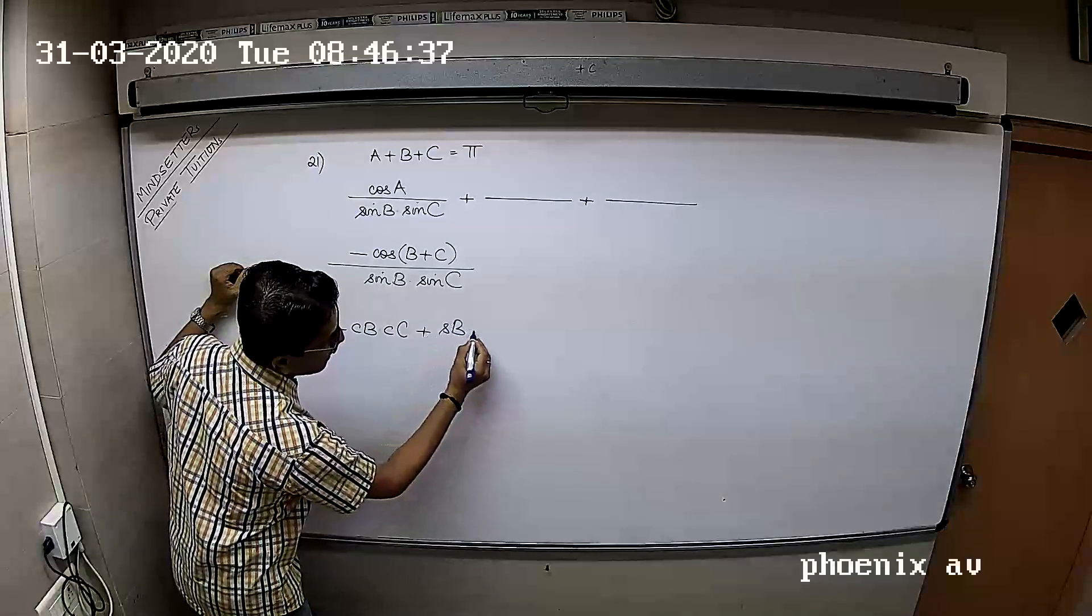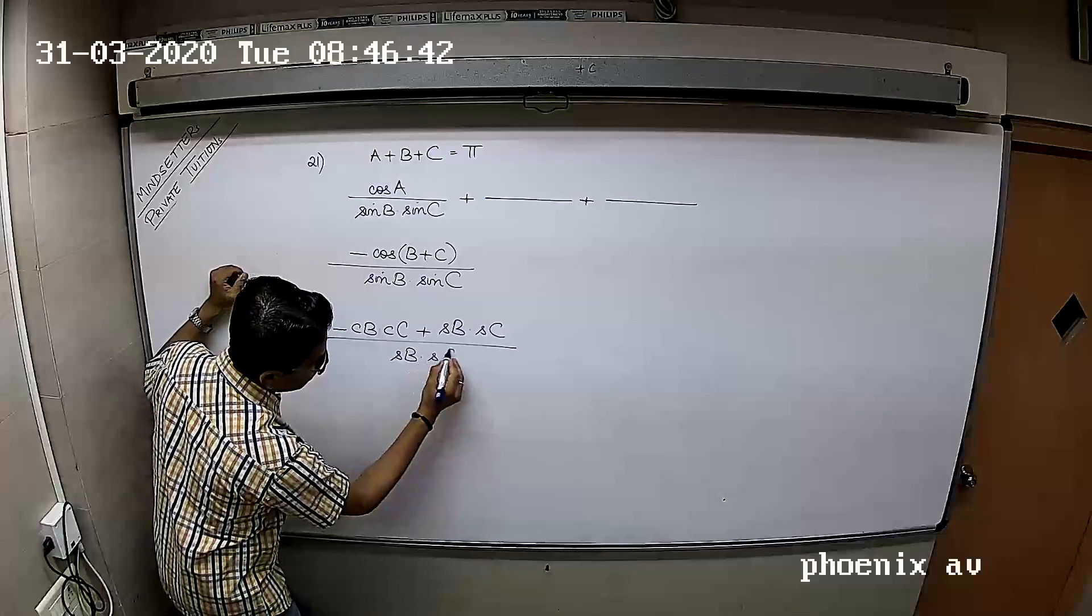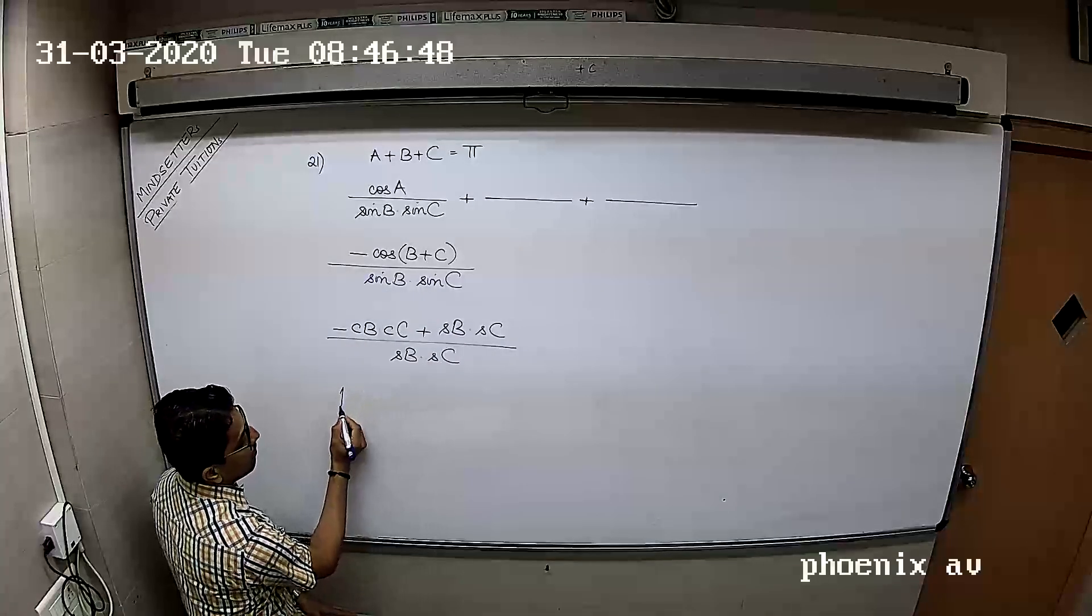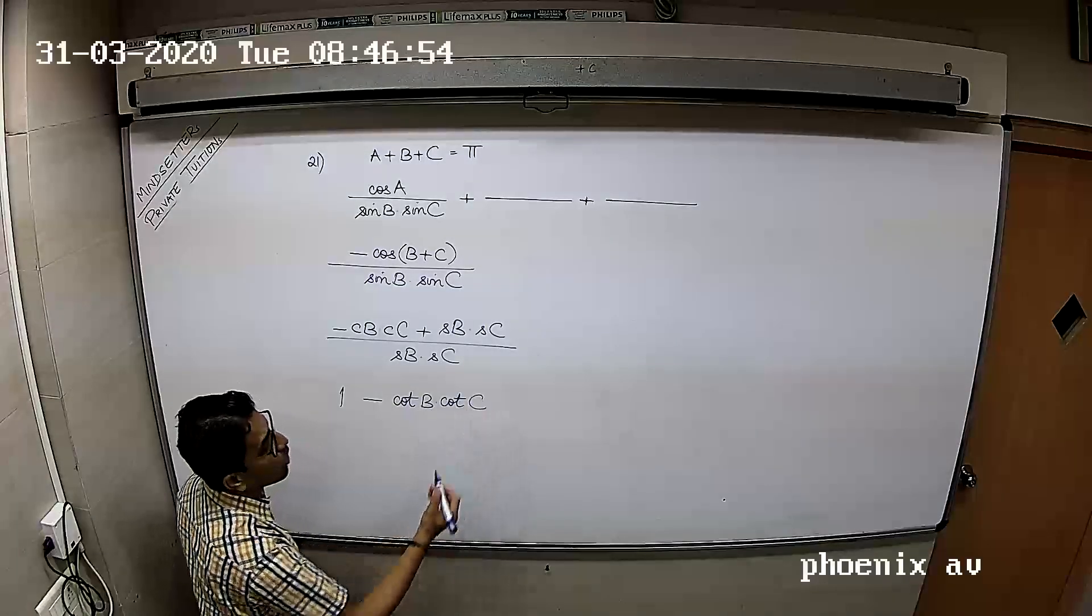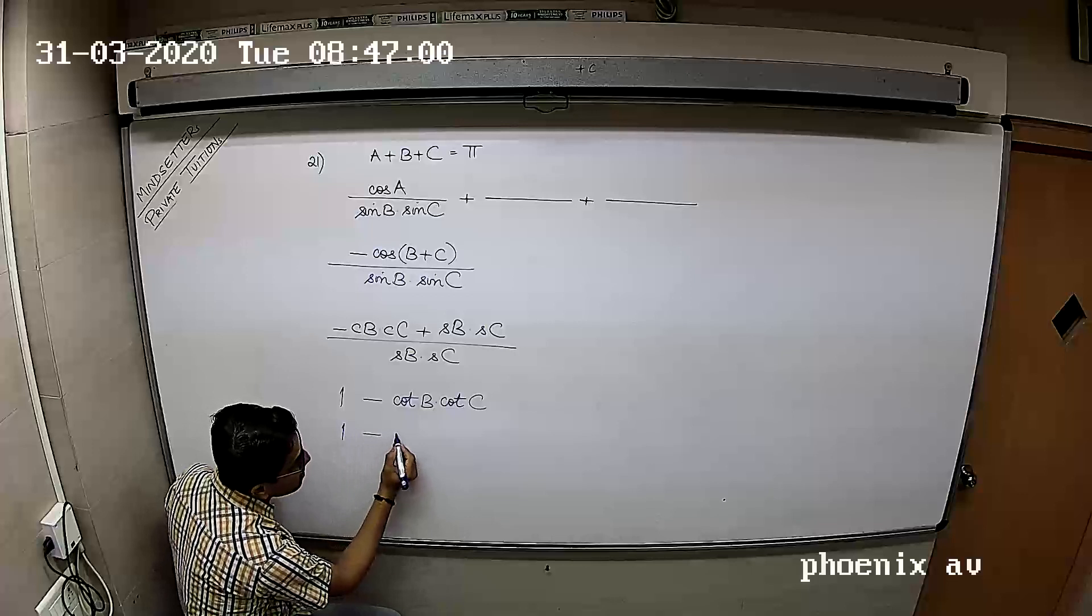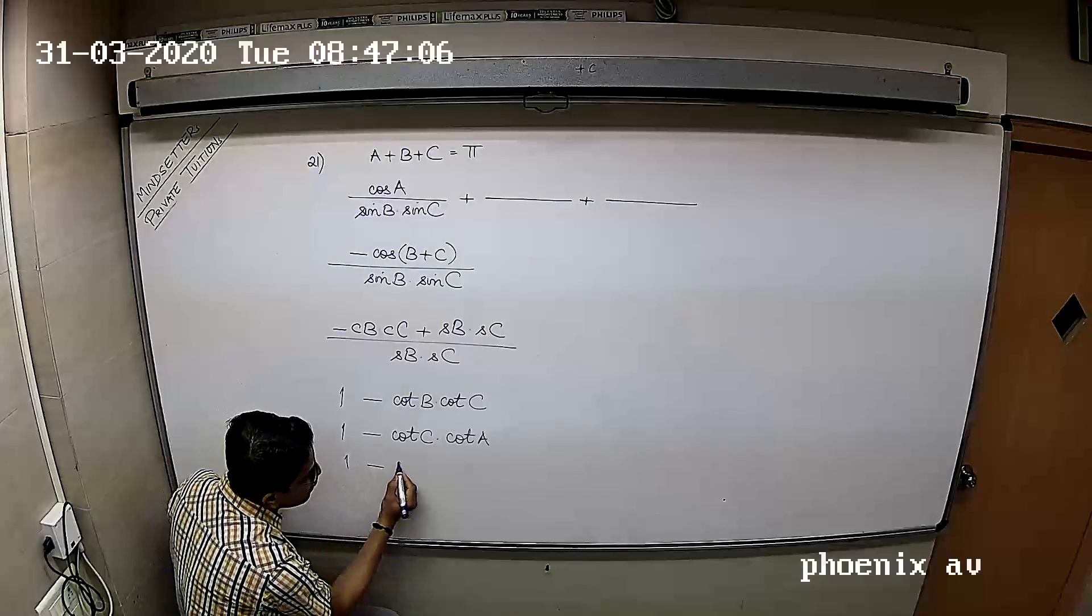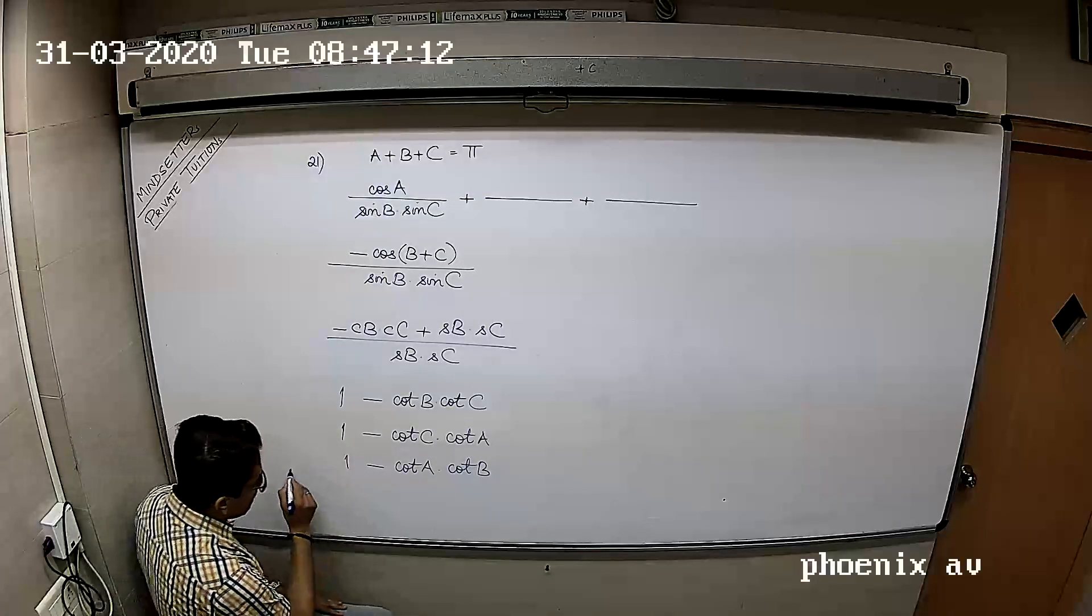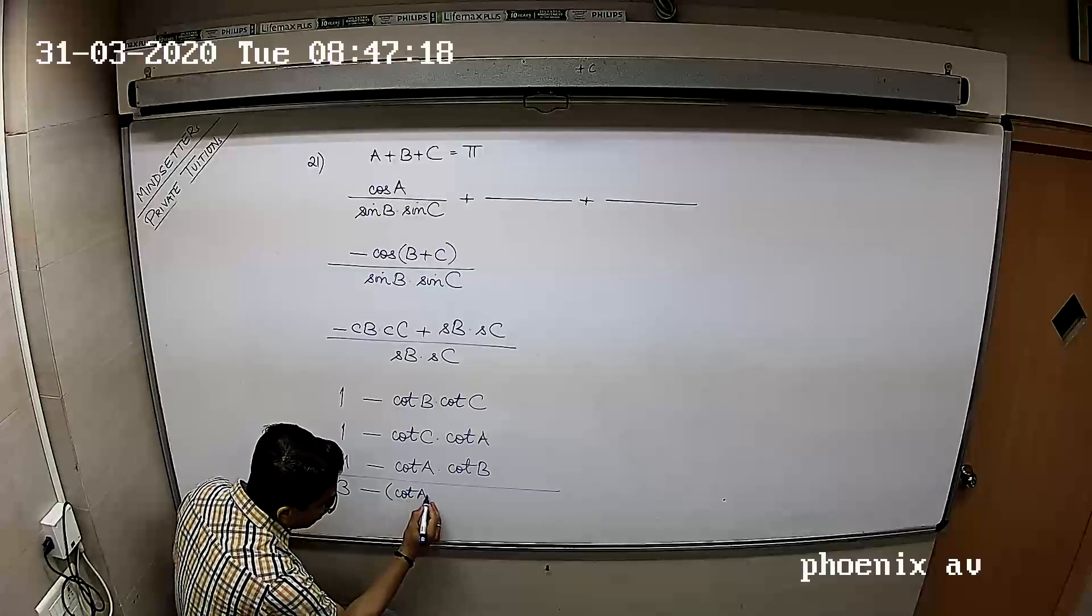This will become minus cos B cos C upon sin B sin C plus 1. If this is the same for all three terms, this will become 1 minus cos C cos A, second term is 1 minus cos A cos B, third term. That means overall this will be 3 minus cot A cot B plus cot B cot C plus cot C cot A.